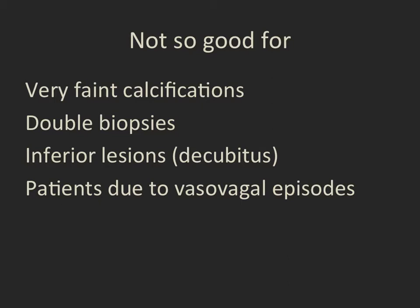What's it not so good for? Very faint calcifications can sometimes be difficult to see on the tomo biopsy unit. It's become less of a problem as we've had more experience however. Very long procedures such as double biopsies, the patient's a little bit more prone to fainting in the upright position. If you do not have a decubitus table and must use an inferior approach, you will need to use the prone table. And finally, if patients are prone to vasovagal episodes, you're going to want to have them preferably in the prone position.